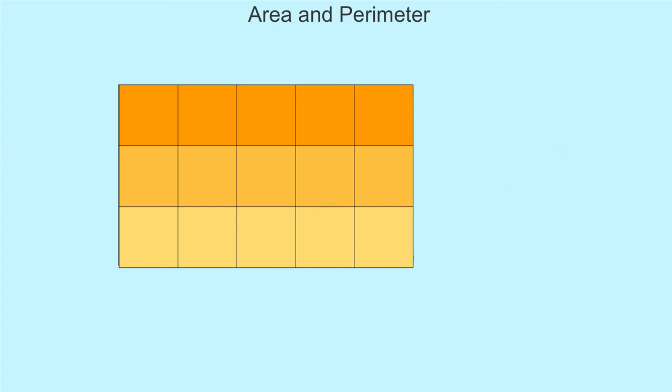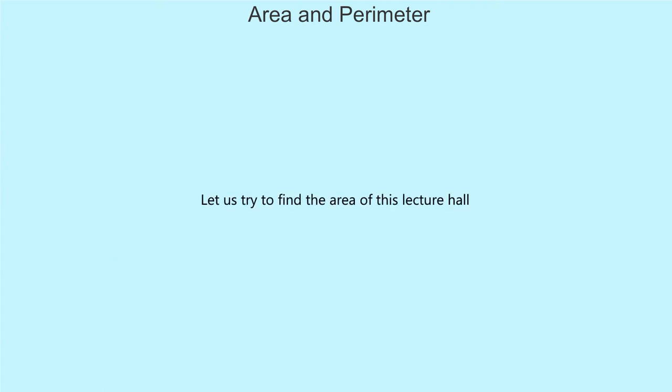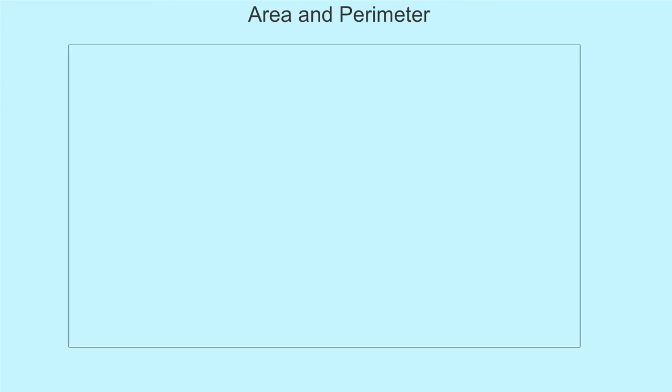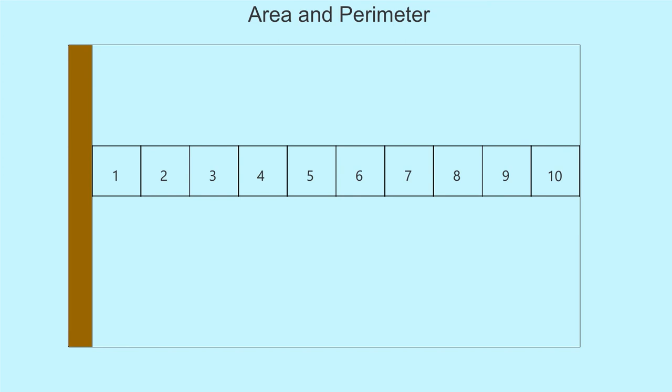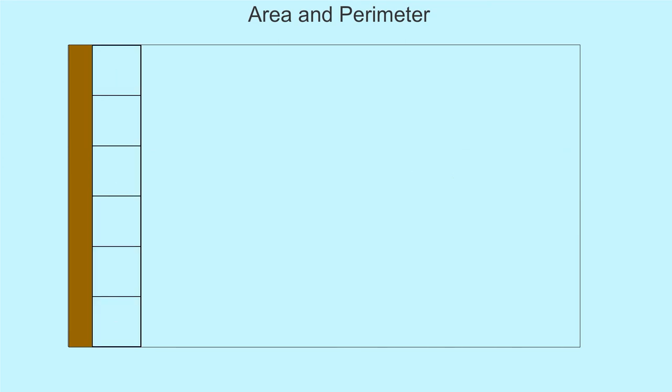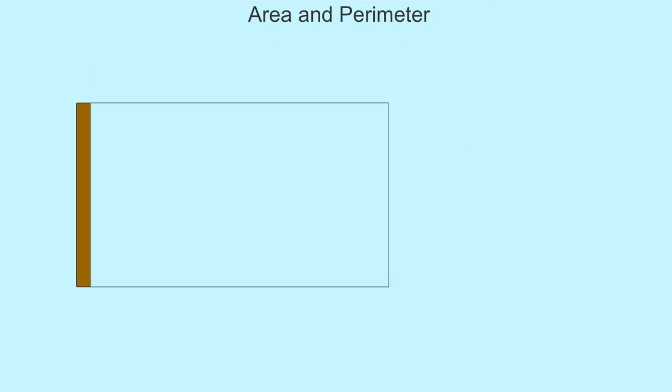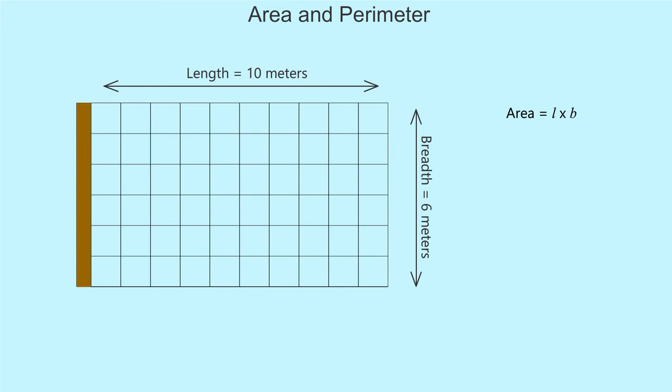Let us try to find the area of this lecture hall. The tiles are 1 meter by 1 meter. There are 10 tiles from the board to the end along there are 6. The length of the rectangular hall is 10 meters and breadth is 6 meters. So, area is equal to L into B so area of the hall is 10 into 6 equal to 60 square meter.